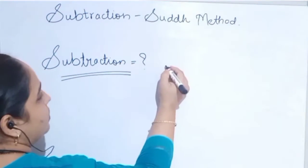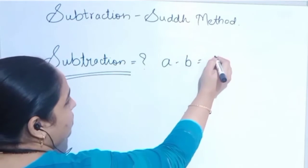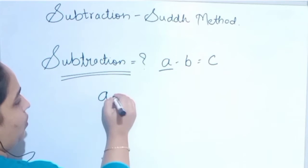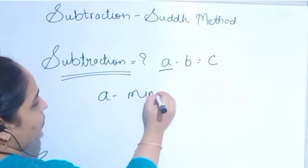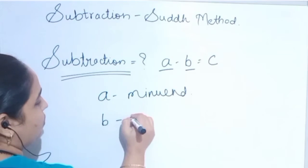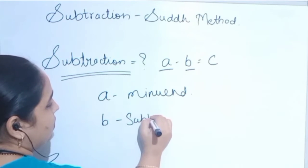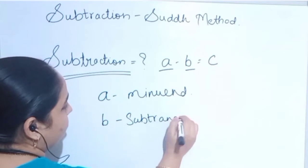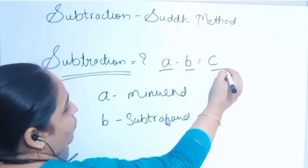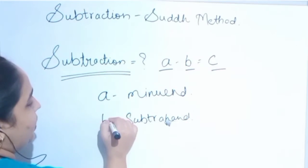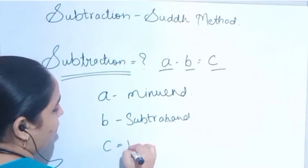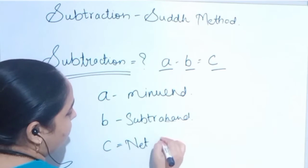What is subtraction? Subtraction means A minus B equals C. What is A? A is called the minuend. What is B? B is called the subtrahend. Then we will get the amount C. So, minuend minus subtrahend is called the net difference.